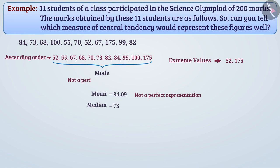Now if we talk about the median, the value of median is 73 here. The number 73 is more effectively representing the marks obtained by the students, and the extreme value of 175 is not having much effect. Hence, median 73 is the best representation of this group.